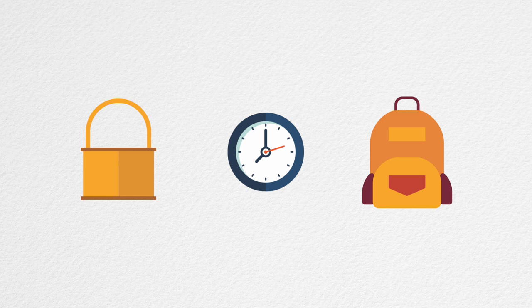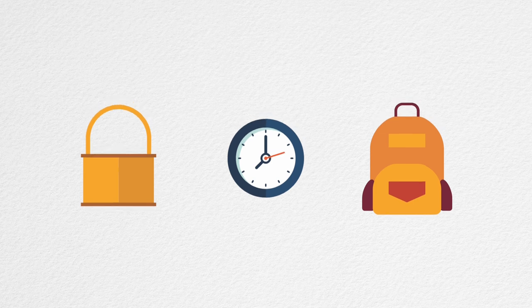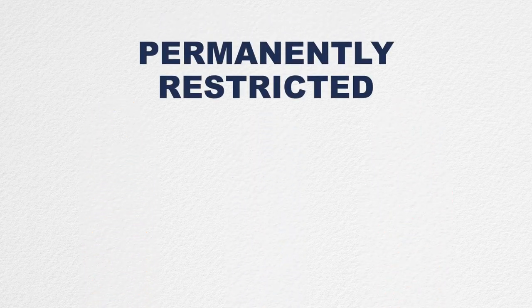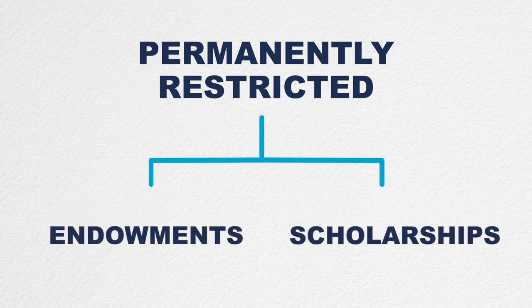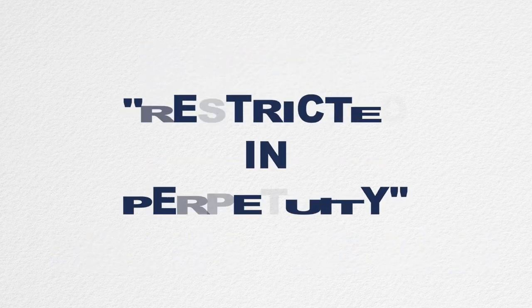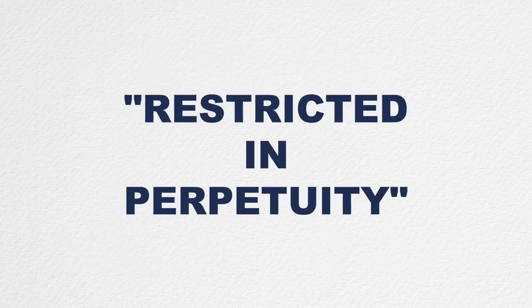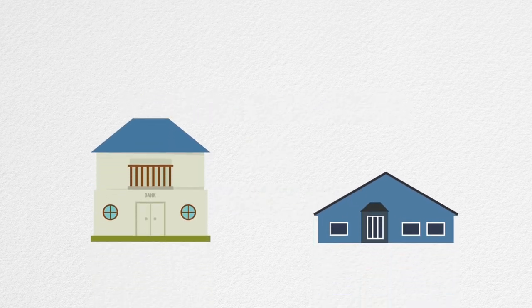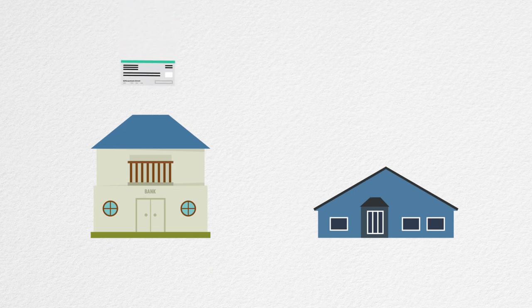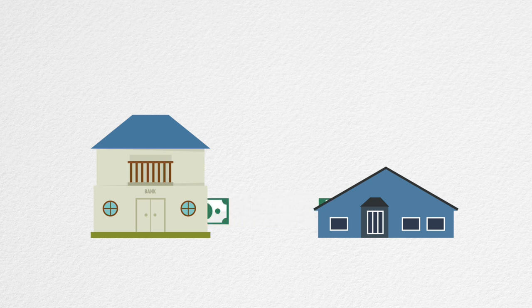Some funds with donor restrictions may be set aside for a purpose, or with a time restriction that will never expire. We used to call these permanently restricted. Endowments and scholarship funds are common examples of funds with this type of restriction. They are required to be restricted in perpetuity, which is the new terminology for these permanent restrictions. Perpetuity essentially means with no end date. The intent is that the principal balance of the contribution will remain as an investment forever, and the nonprofit will utilize only the interest or other earnings from the investment.